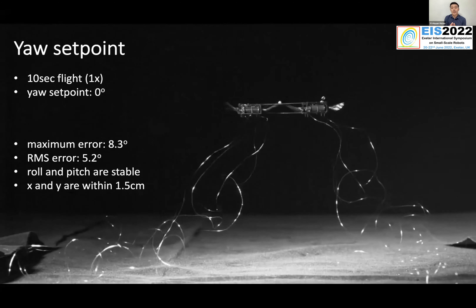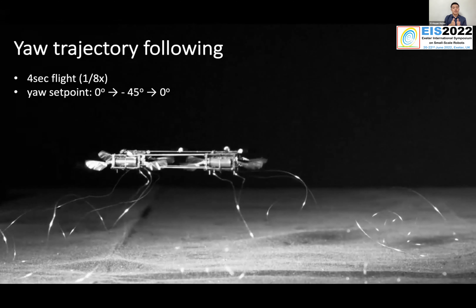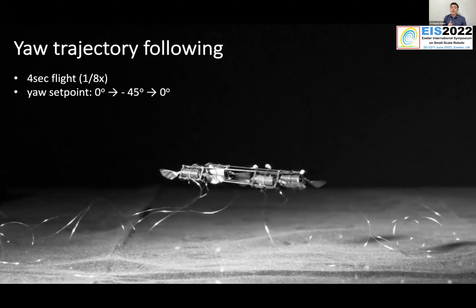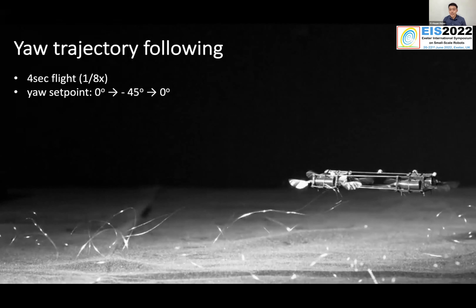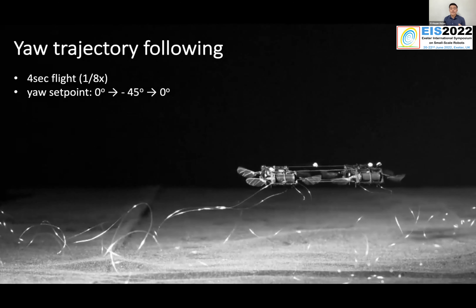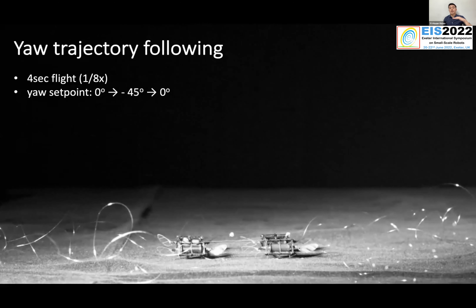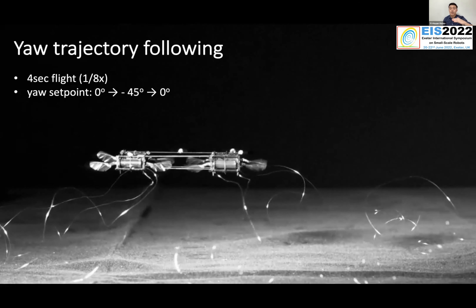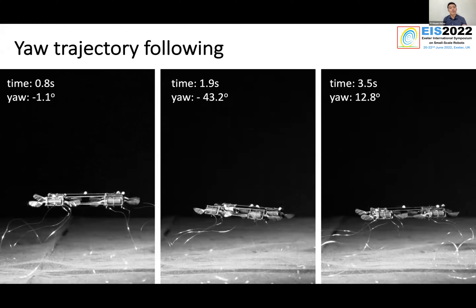In addition to a static set point, we can also change the set point during flight. This video shows we change the set point from zero degrees to negative 45, and then back to zero. This is probably not the best flight we've performed — the x-y position drifts quite a bit — but this is still ongoing research we're trying to improve. What we can learn from this video is that the yaw actuation is quite effective, and the stability for pitch and roll doesn't seem to be much affected, because you don't see very high frequency oscillation on the robot body. Screenshots confirm the robot goes from zero degrees, turns to negative 43, and comes back to around 10 degrees.